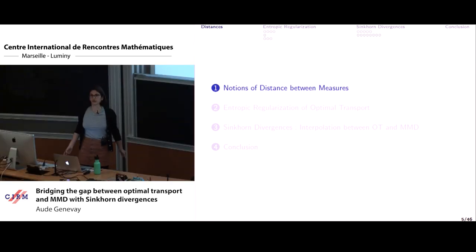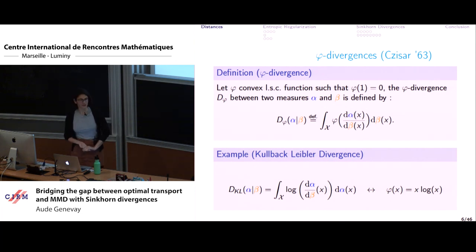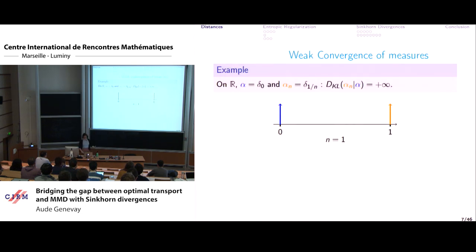The question is: what notion of distance do we use for these minimization problems? The most commonly used one is phi divergences, introduced in the 1960s by Csiszár. These compare the odds ratio of the two probabilities alpha and beta. The best-known example is the Kullback-Leibler divergence. When alpha and beta don't have the same support, this doesn't work well.